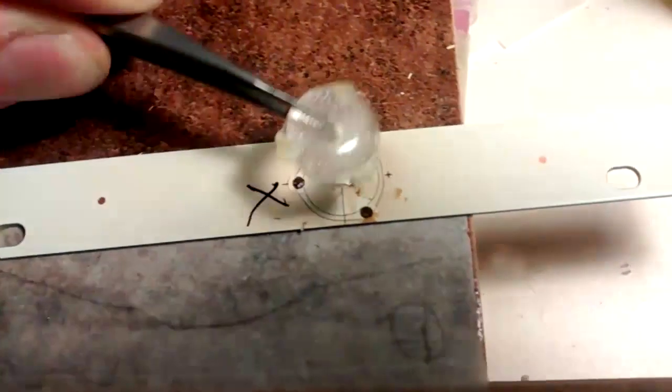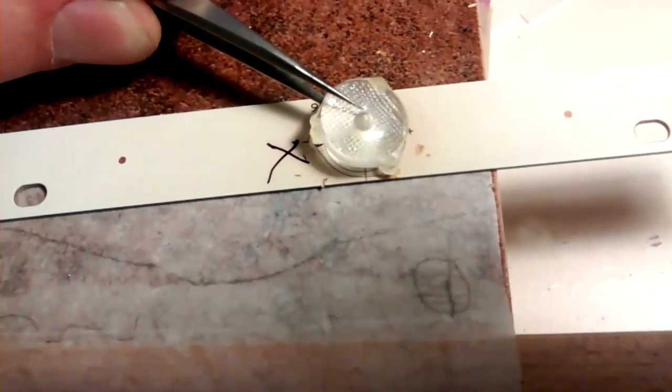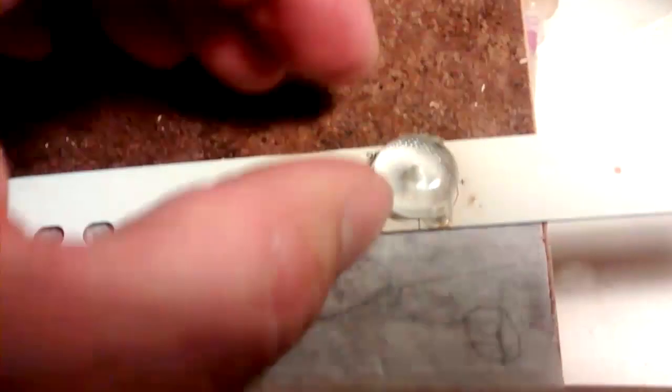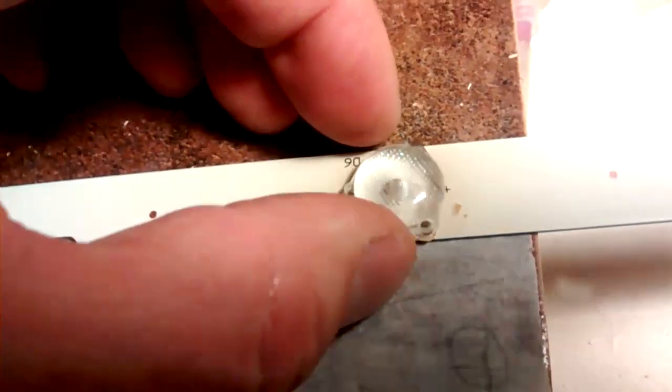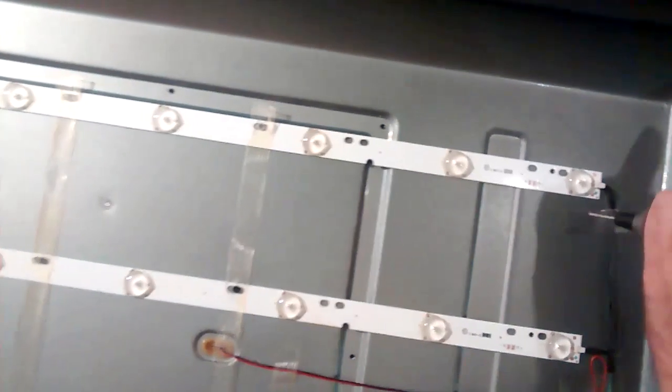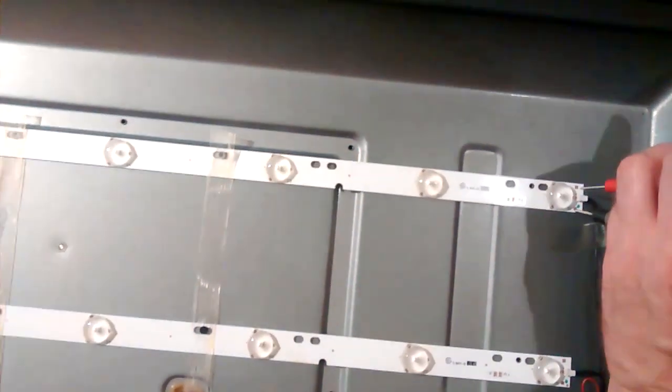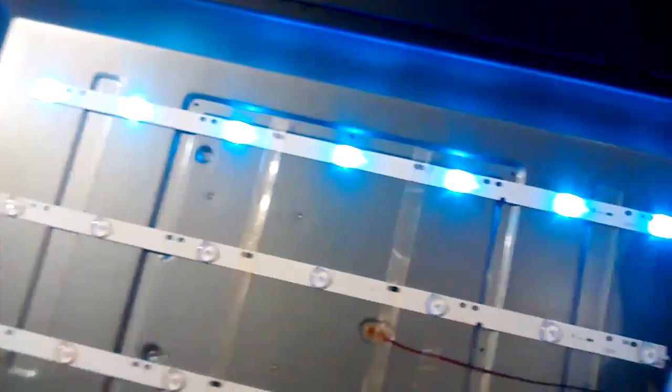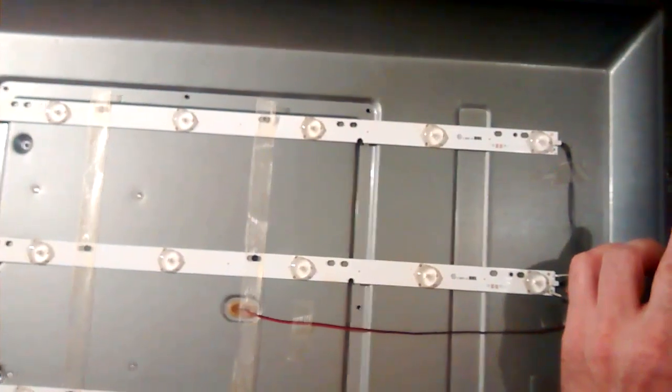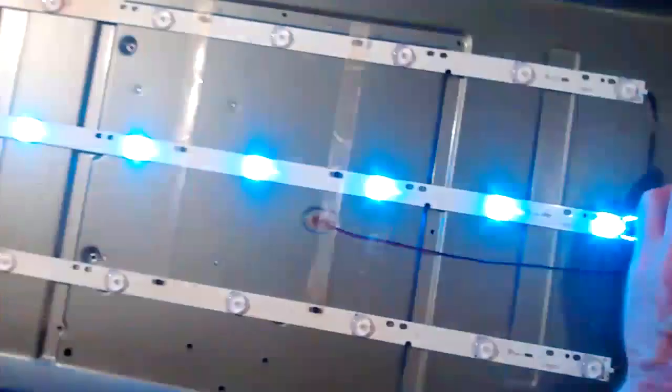Once this is done, glue the little lens back on the LED strip. After that check all the LEDs. I always prefer to test the whole strip at once. Here in this case it's about 20 volts to apply at one LED strip.